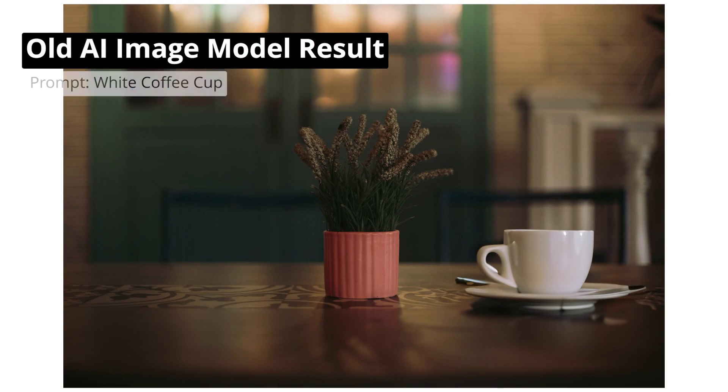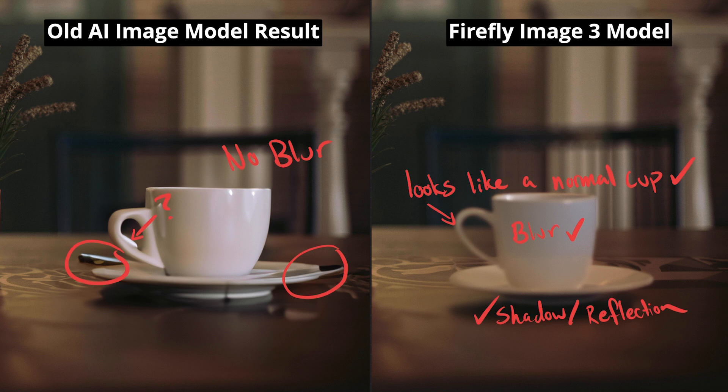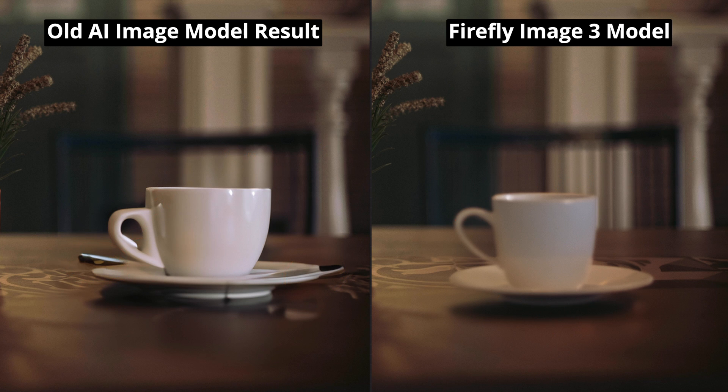I've been testing this new model against the old AI model that's still used in Photoshop CC, and I wanted to share a few key examples. First of all, the image and detail improvements are extremely obvious from individual element generations. In the two images you see here, both were generated using the same prompt, but the fine details are much better when generated with the Firefly Image 3 model in Photoshop beta. Previously, rendering individual elements like this looked so low quality that they were almost unusable in any of my projects, but I think that's about to change.